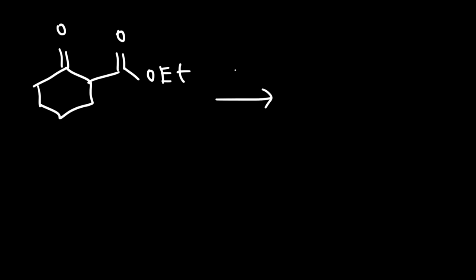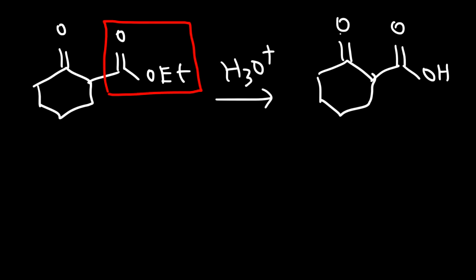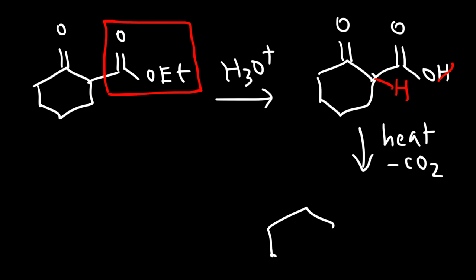Once you have the final product of the Dieckmann condensation reaction — the beta-keto ester — there's some other things you can do with it. For instance, if you react it with H3O+, the ester functional group will be hydrolyzed into a carboxylic acid. Whenever you have a carboxylic acid that is two carbons away from a carbonyl group such as a ketone, decarboxylation can occur if you heat it — CO2 will be removed. The end result after decarboxylation is you lose the carboxylic acid functional group and just get a ketone.